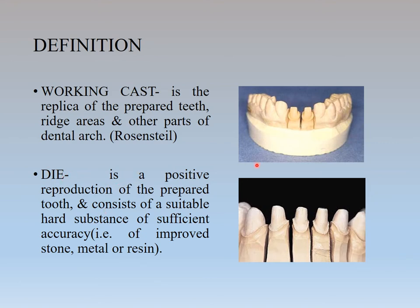Coming to the definition of a die: a die is a positive reproduction of a prepared tooth and consists of a suitable hard substance of sufficient accuracy — that is, improved stone, metal, or resin. This individual structure is known as a die.